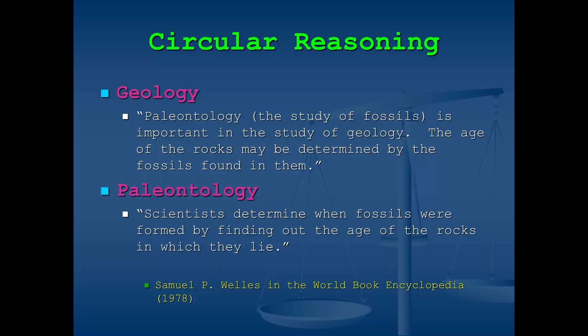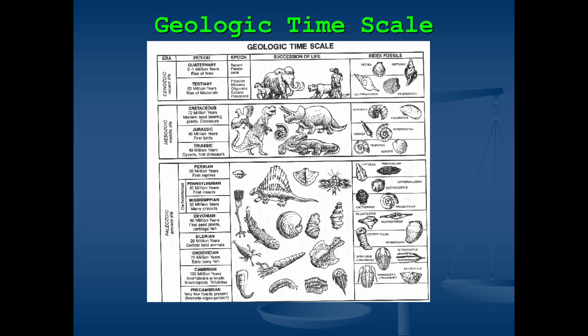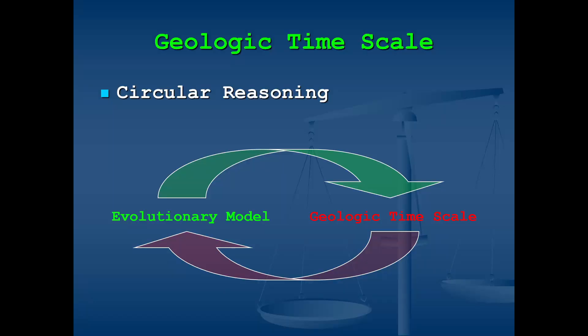Circular reasoning manifests itself in the application of various principles or laws of science. For instance, if you look in the 1978 World Book Encyclopedia at entries for geology and paleontology penned by Samuel P. Wells, you will see: 'The age of the rocks may be determined by the fossils found in them,' and 'scientists determine when fossils were formed by finding out the age of the rocks in which they lie.' So the age of rocks is determined by fossils, and the age of fossils is determined by the age of the rocks. The evolutionary geologist uses his evolutionary model to construct the geologic timescale, and then uses the geologic timescale to prove his evolutionary model.